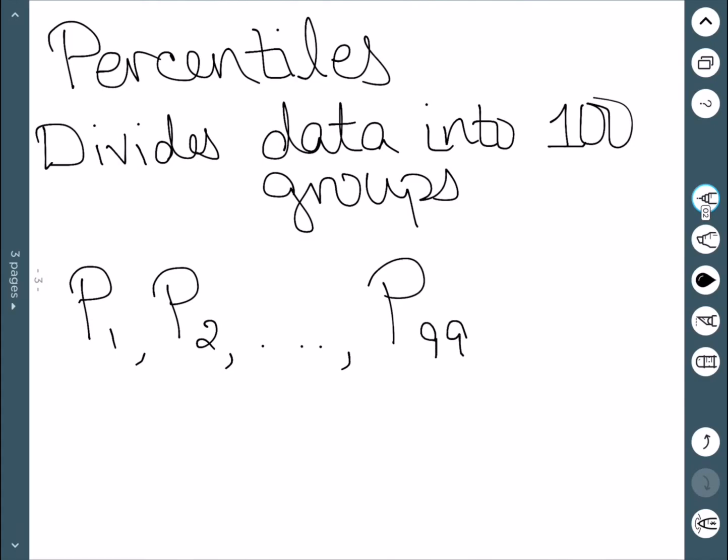This does divide the data into 100 groups since we have everything below P1, everything below P2, below P3, etc., and then we also have the above P99. Therefore, this is actually 100 separate groups.